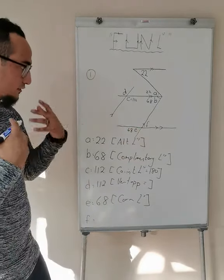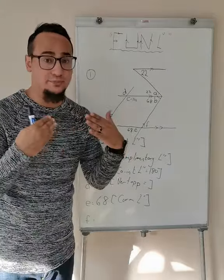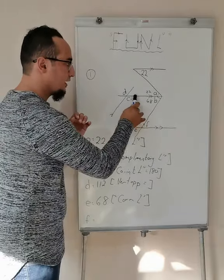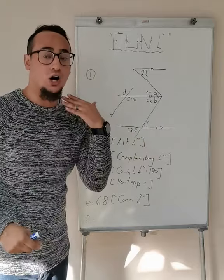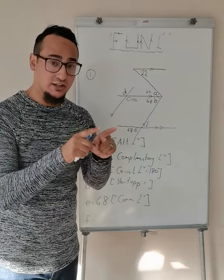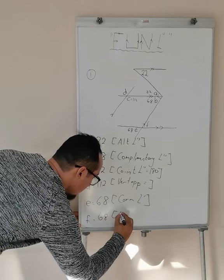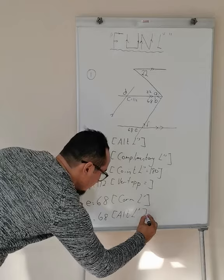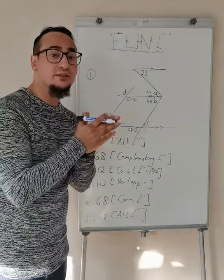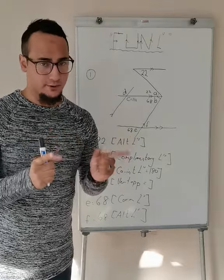And then F. F can be found in different ways. The first one I can say is vertically opposite — that will always be the easiest. But because I'm busy with fun angles, I'm going to use that B and F form a Z, meaning they are alternate to one another. Alternate angles are the same, so F is also equal to 68 degrees. There are many different ways of getting to the same answer — I only focus on your fun angles.